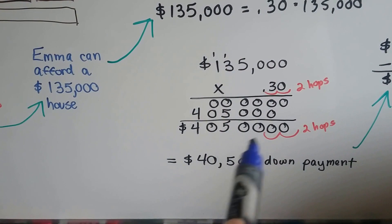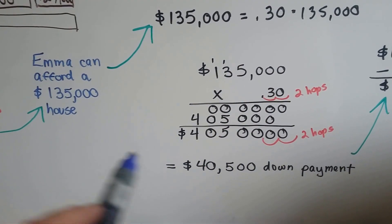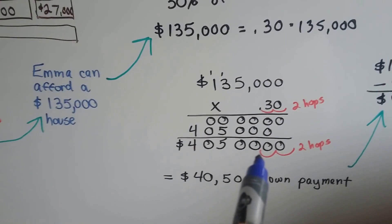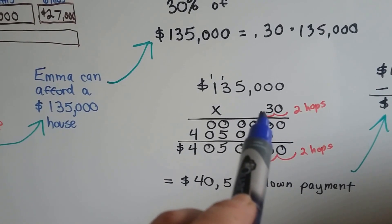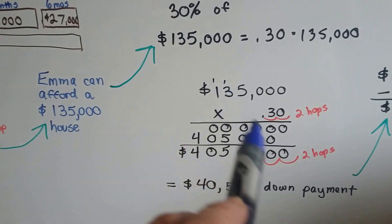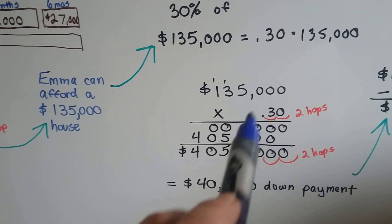We do our multiplication. I don't need to tell you how by now. You should know how to multiply decimals, right? So, we count the hops in the 30% that we changed to a decimal.